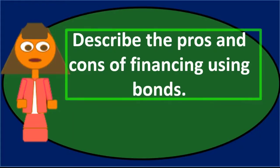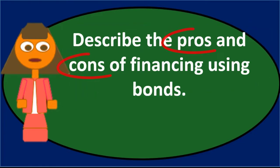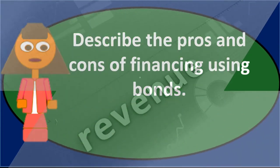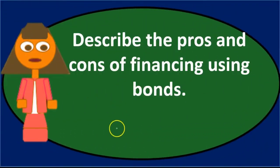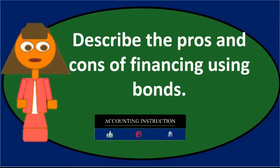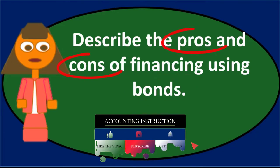When we see a discussion question or essay question like this about pros and cons, we have to imagine what we are comparing against. In this case, we want financing — we're trying to generate money for the company. The main way we'd like to get money is through revenues, but if we need to finance the business in some other way, one option would be bonds.